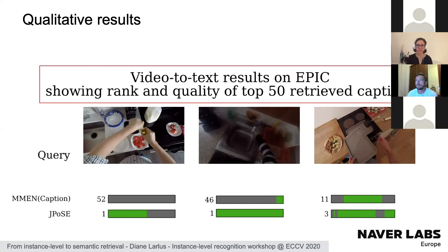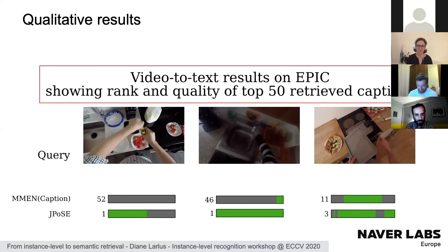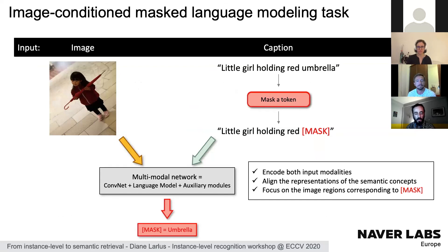Last question: for Part 3, when masking tokens, are you masking randomly or focusing on particular parts of speech? For instance, nouns might make more sense for images, while verbs would matter more for video.